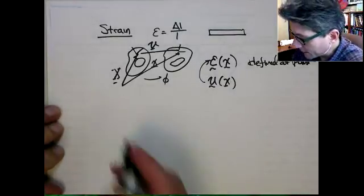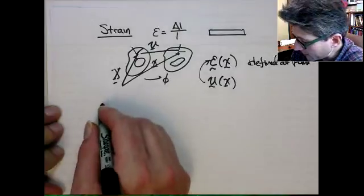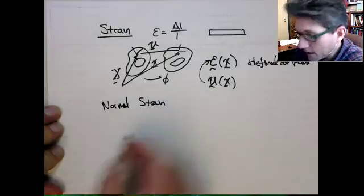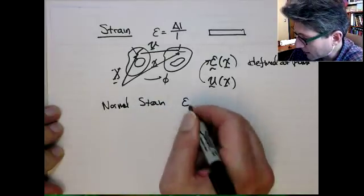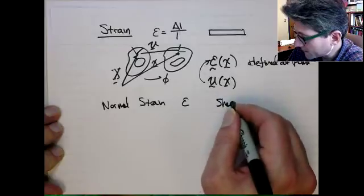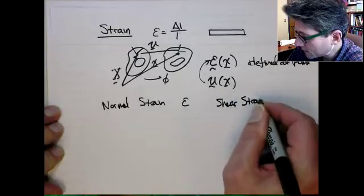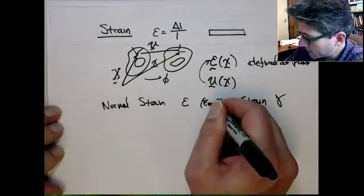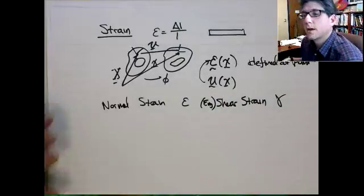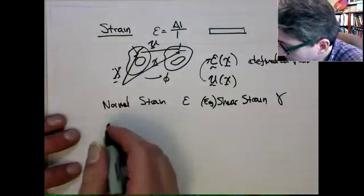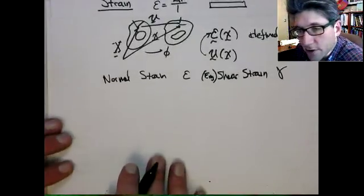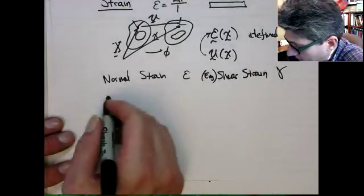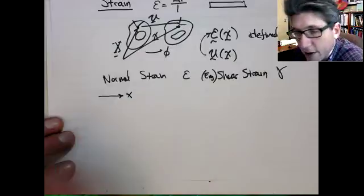We remember from undergraduate that there are two types of strain. We have a normal strain — which I'll call epsilon — and then we also have a shear strain, which is really an engineering shear strain, gamma. They have two different pictures, so let's just look at the normal strain first.